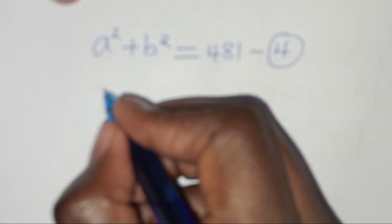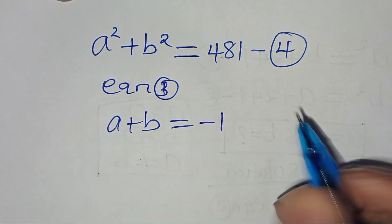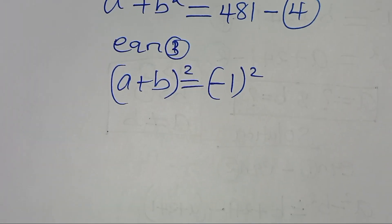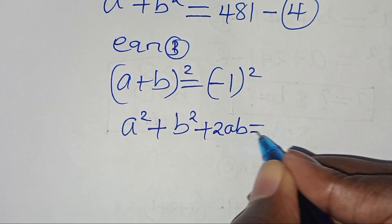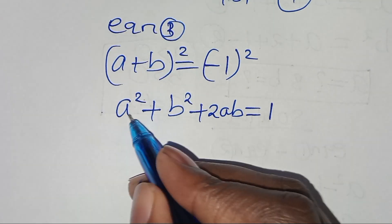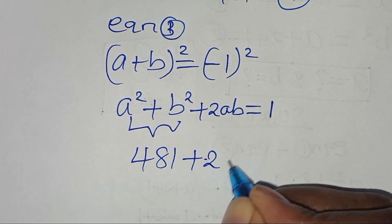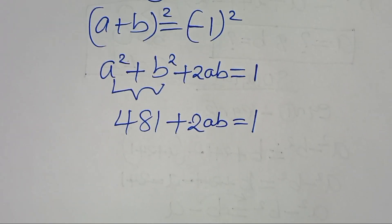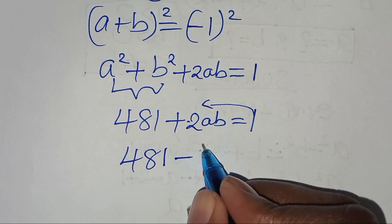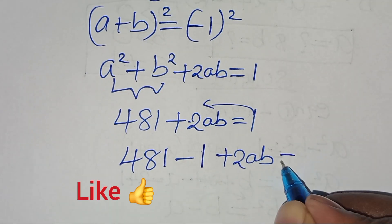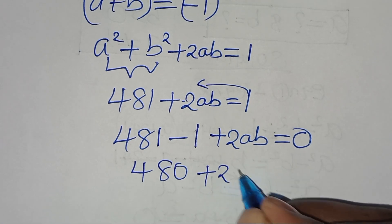From equation 3, a plus b equals minus 1. Let's square both sides, giving a squared plus b squared plus 2ab equals 1. We know from equation 4 that a squared plus b squared equals 481, so we have 481 plus 2ab equals 1. Taking 1 to the left hand side: 480 plus 2ab equals 0.